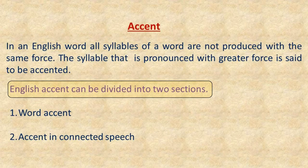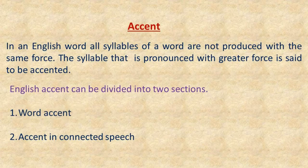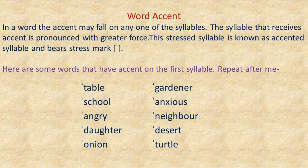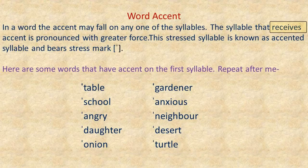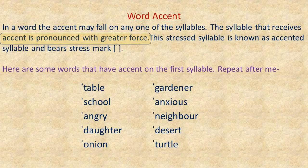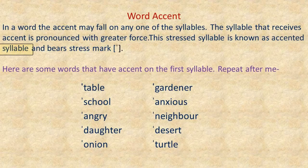English accent can be divided into two sections: word accent, and accent in connected speech. Now we will discuss word accent. In a word, the accent may fall on any one of the syllables. The syllable that receives accent is pronounced with greater force. This stressed syllable is known as the accented syllable and bears a stress mark like this.